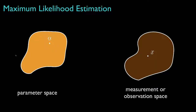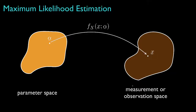Similar to our setup for least squares estimation, we envision a parameter that we call alpha, taking a value or set of values for a vector parameter in some parameter space, and an observation, x, that takes a value or set of values for a vector measurement in some measurement or observation space. Then we assume we have a statistical model that relates the observation to the parameter in terms of a probability density function for a continuous-valued observation, or a probability mass function for a discrete-valued observation. We assume for now that the unknown parameter takes continuous values.